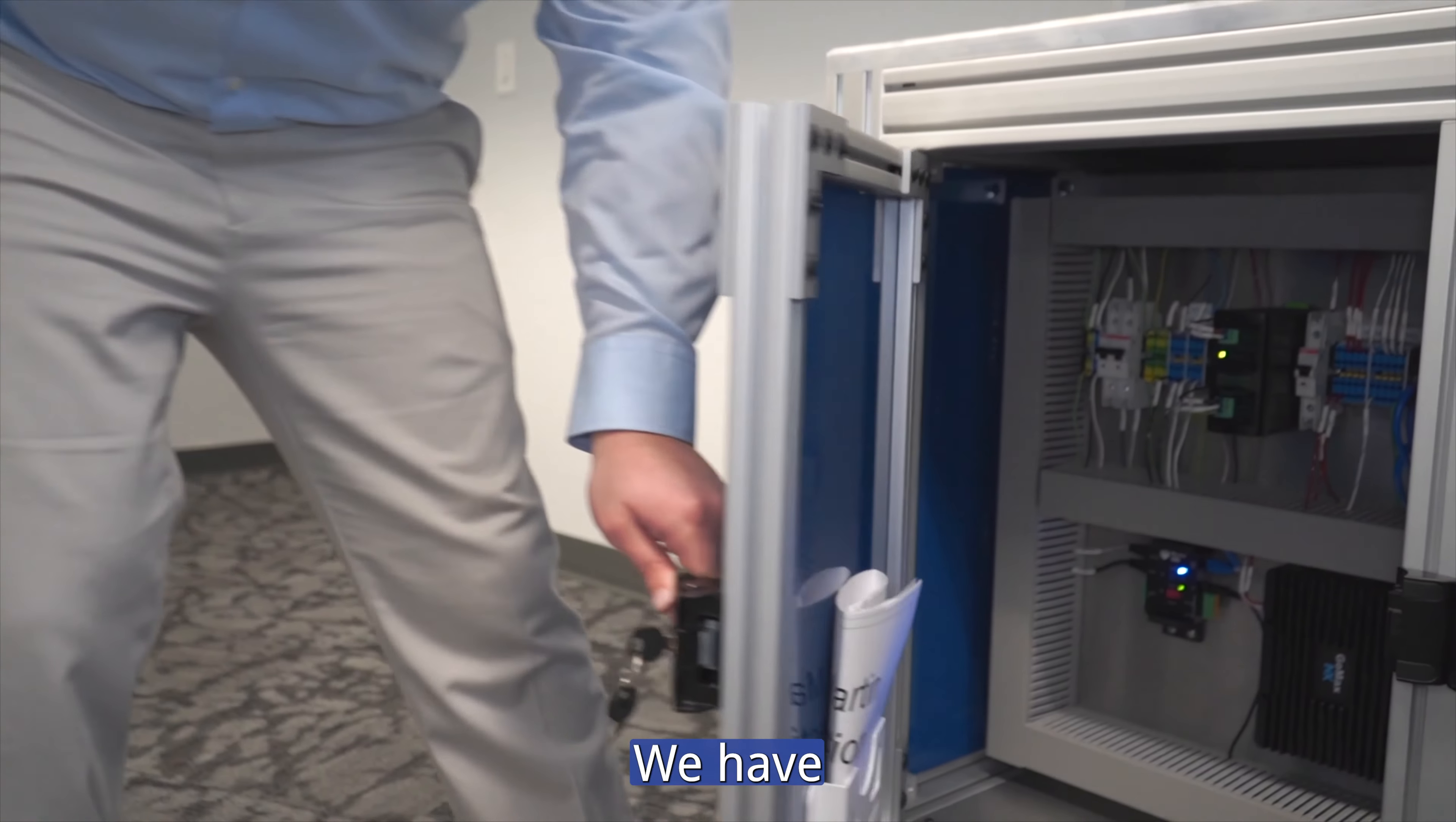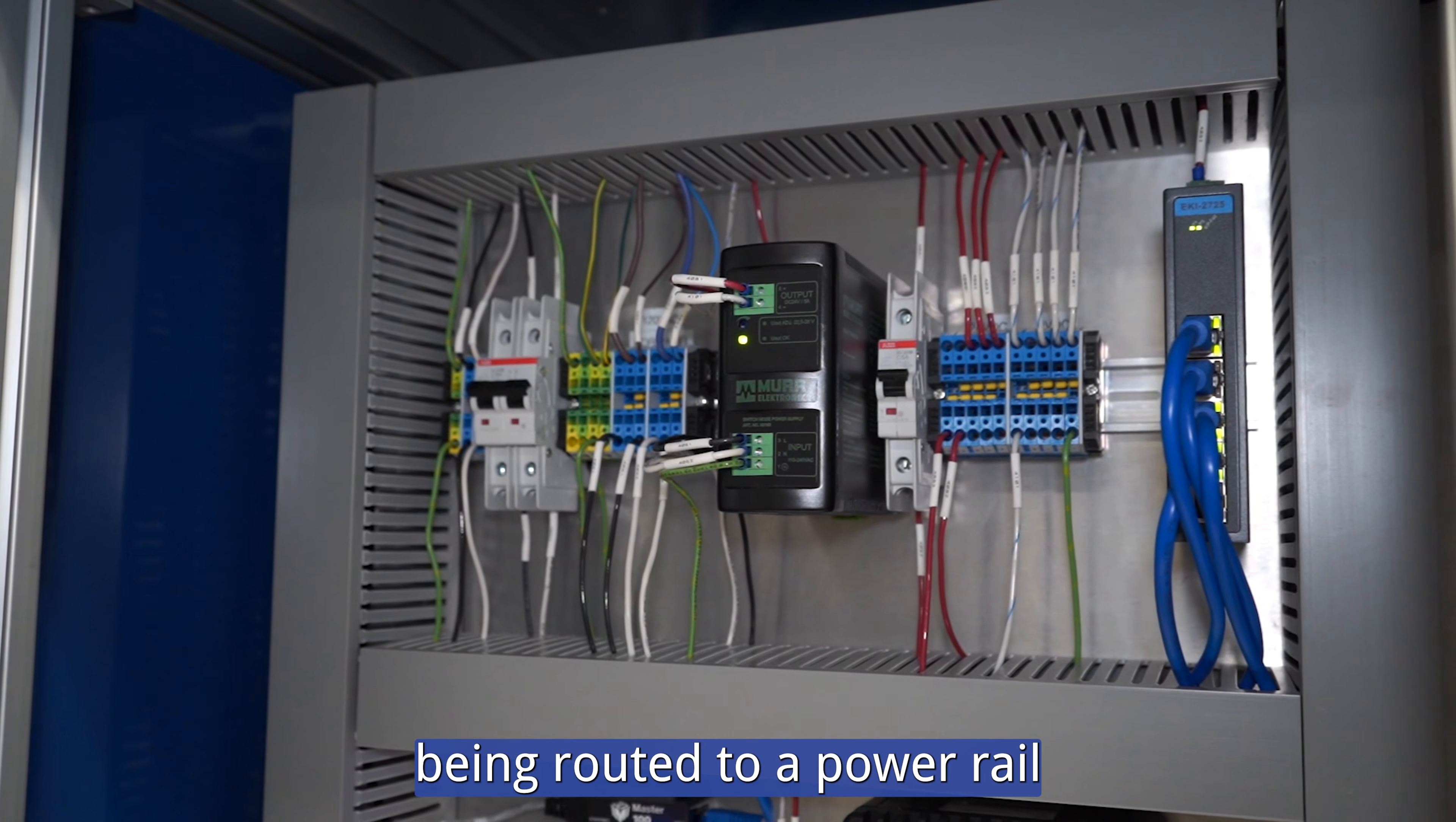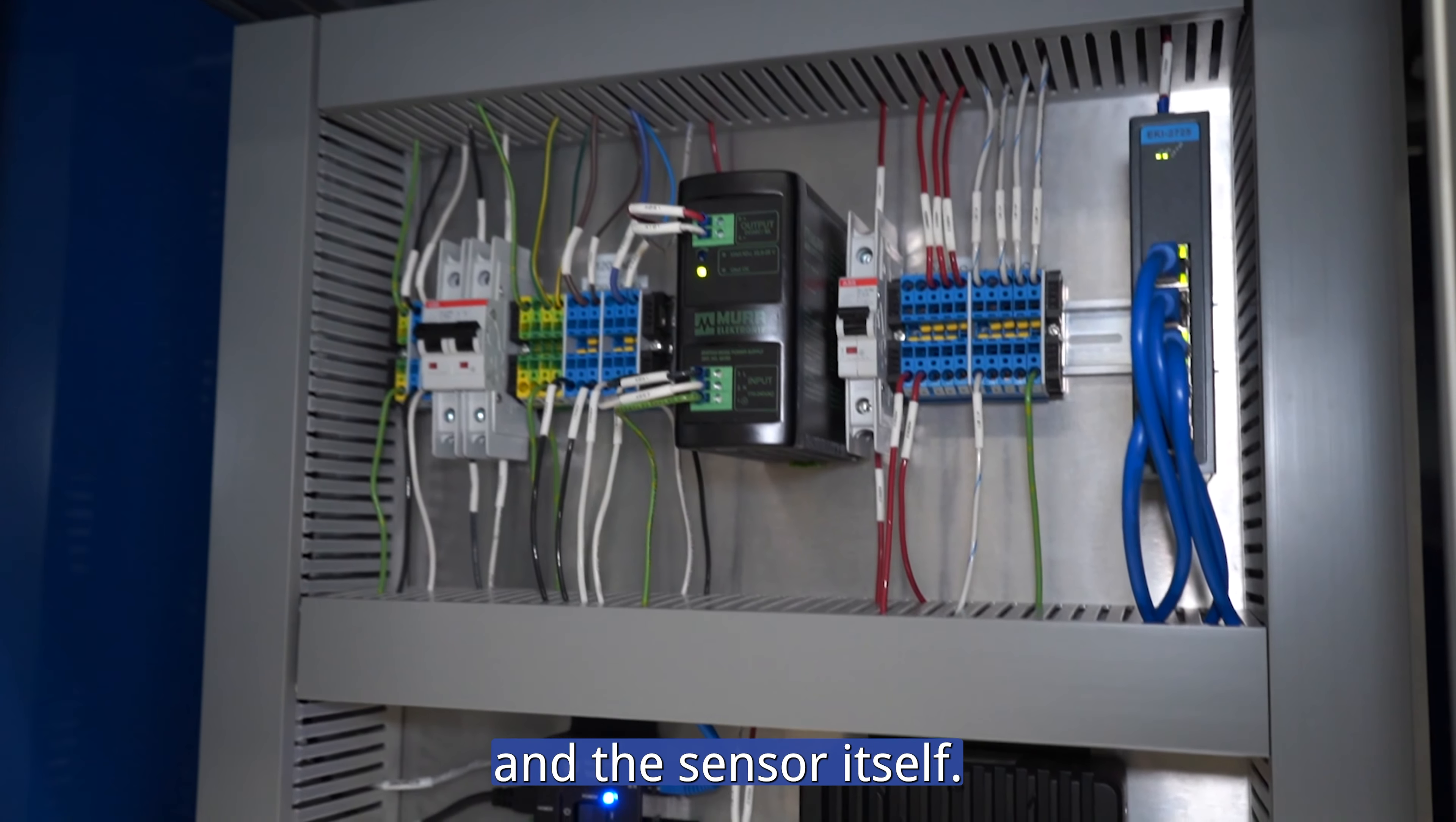Under the hood, we have all the power and components that actually relate to the system itself. We have 120 volts coming in, being routed to a power rail, into our 24 volt power supply. There's a network switch which is used to communicate to the robot and the sensor itself.